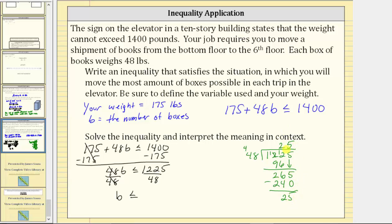Regardless of the remainder, though, we cannot round the number of boxes up to 26. Because if we do, the total weight is going to be greater than 1,400 pounds. Which means we'll have to round down or round b to 25. So because we have an application problem here, we will say b must be less than or equal to 25.